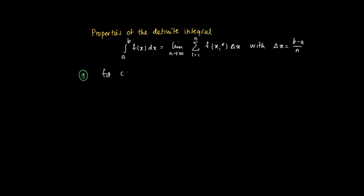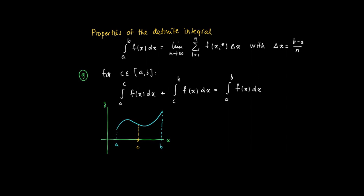The final property, property 9, is that we may split up the interval a, b into two pieces: a to c and c to b. The integrals from a to c of f(x) dx and from c to b of f(x) dx will both exist, and if we sum them, we get the original integral from a to b of f(x) dx. This is illustrated in the following picture: if we have a function defined on a, b and we cut it into a, c and c, b, then we can determine the integral from a to c and from c to b, add those pieces, and we get the integral from a to b of f(x) dx. So the integral equals piece 1 plus piece 2.